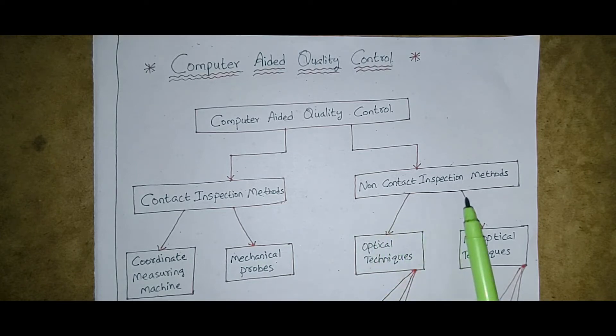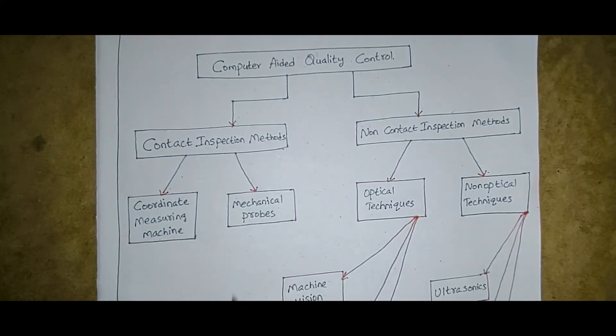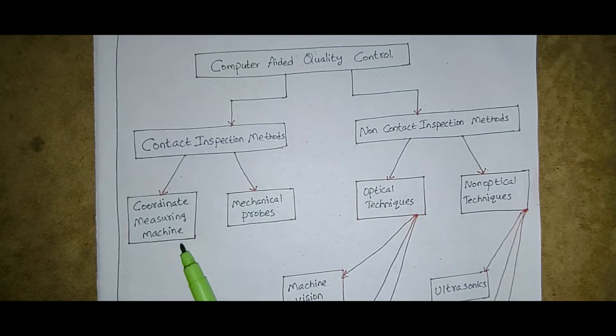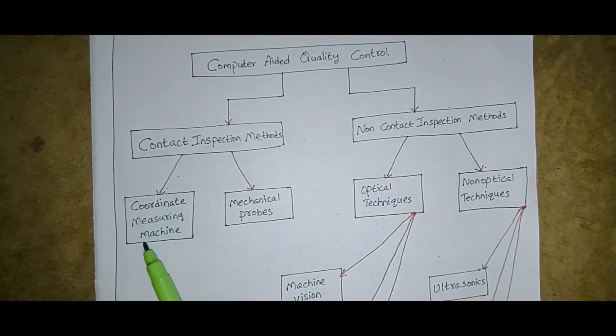Under this contact inspection methods, again it is of two types. First is the coordinate measuring machine, usually we call it as CMM. CMM is named as coordinate measuring machine.